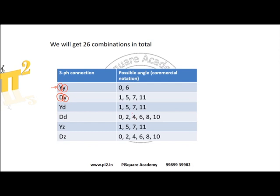So here, YY0 and YY6. YY0 means the angle between the high voltage and low voltage winding is 0 degrees — or in clock rotation, 12 o'clock. YY6 means star-star with 6, which means 180 degrees. Here we can get four different combinations.